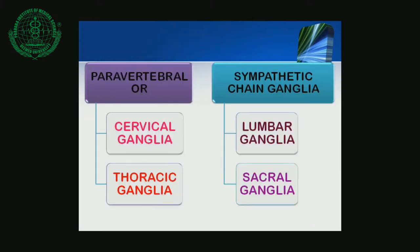The Paravertebral or Sympathetic Chain contains: Cervical Ganglia, Thoracic Ganglia, Lumbar Ganglia, and Sacral Ganglia. So the Sympathetic Chain is divided into these four groups.